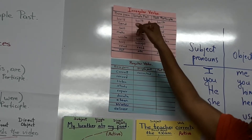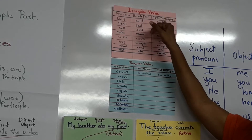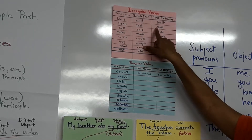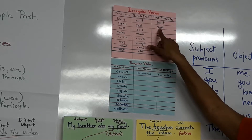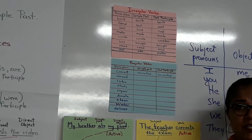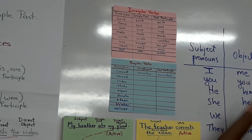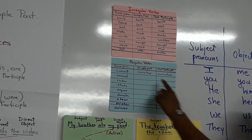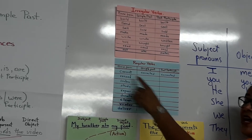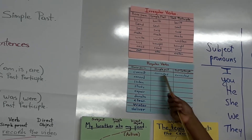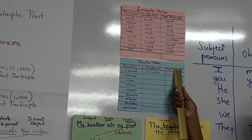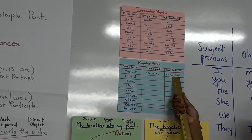The verb changes into the simple past and the past participle, and in some occasions they are the same, like 'sent' and 'sent'. In the regular forms, it is very easy to identify the past participle of the verb because it is the same as in the simple past. For example, we have the verb 'correct' — the simple past is 'corrected' with -ed at the end, and the past participle is also 'corrected'.